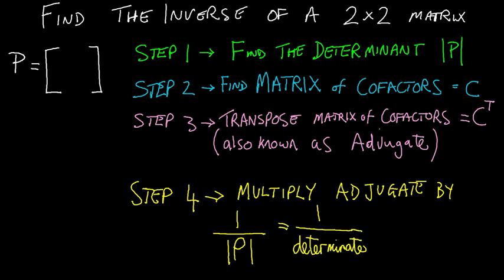We'll have a go at finding the inverse of a two-by-two matrix. The steps are: find the determinant first, find the matrix of cofactors, then transpose the matrix of cofactors — which is also known as the adjugate — and then multiply the adjugate by one over the determinant. Let's try some examples and see how quickly we can do them.